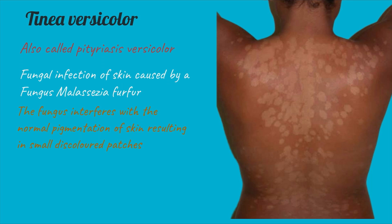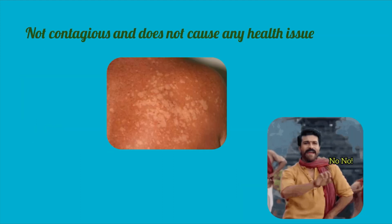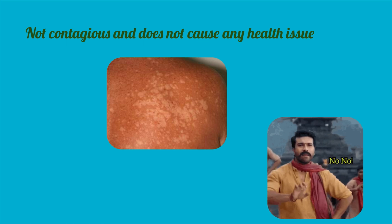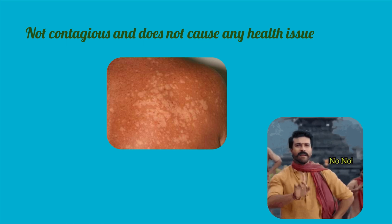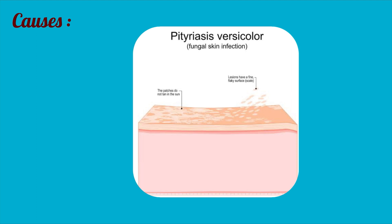Tinea versicolor is also known as Pityriasis versicolor. It is a fungal infection of the skin caused by a fungus known as Malassezia furfur. The fungus interferes with the normal pigmentation of the skin, resulting in small discolored patches that appear lighter in color than the surrounding skin. It is not contagious and does not cause any serious health issue. The rapid growth of the fungus causes the discoloration of skin, resulting in Tinea versicolor.